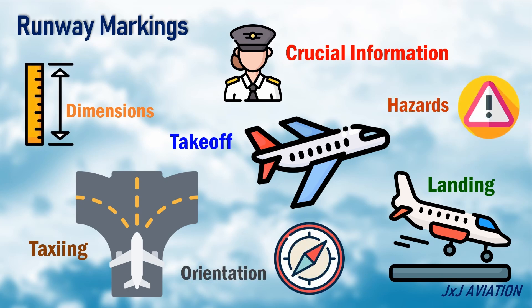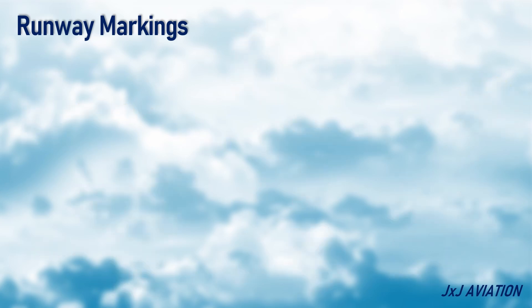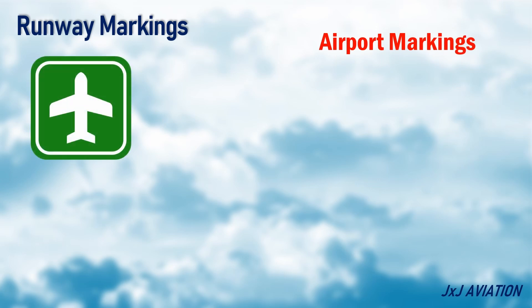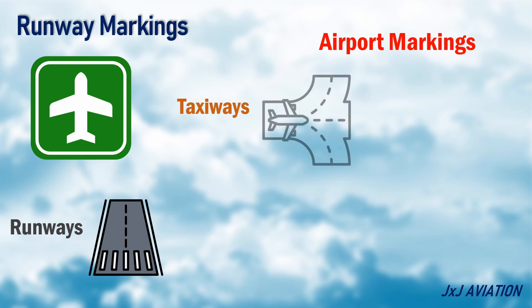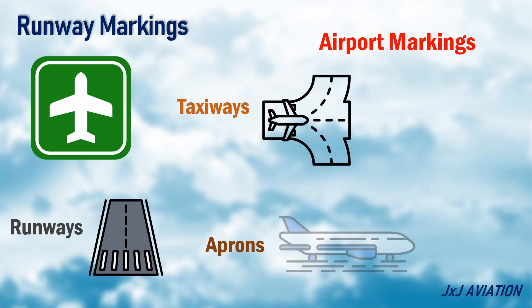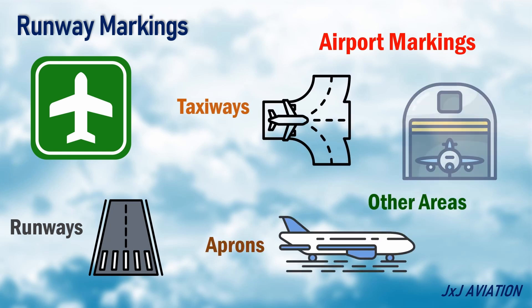Runway markings are a part of the airport markings. Airport markings refer to lines, symbols, and colors on runways, taxiways, aprons, and other areas in an airport.